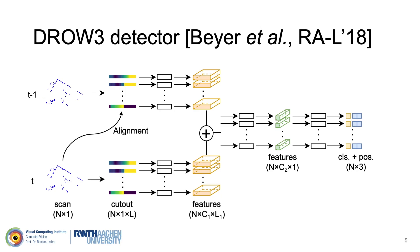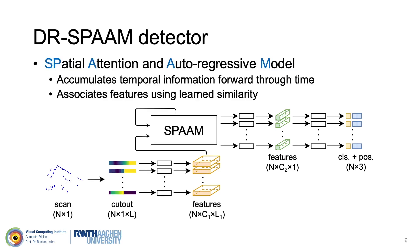Due to LiDAR ego-motion, there is misalignment between scans which must be corrected before they can be fused. This backward feature fusion is expensive because each realigned scan has to be forwarded again through the network for feature extraction. We propose to replace the backward feature fusion with the spatial attention and autoregressive model, which accumulates temporal information forward through time. The SPAN module associates features using learned similarity, removing the need for aligning scans and redundant forward passing. The new person detector, DRSPAN, achieves a new state-of-the-art result while being much faster than multi-scan DROV3.